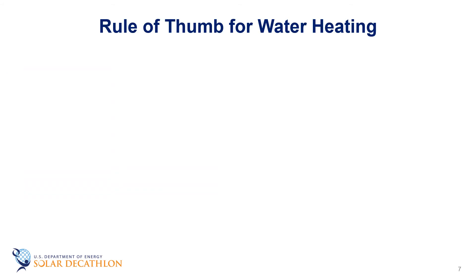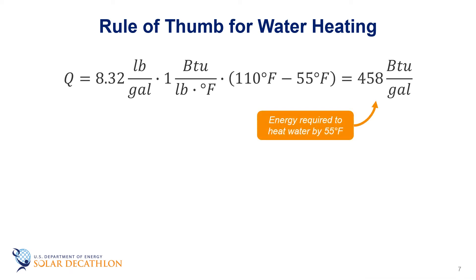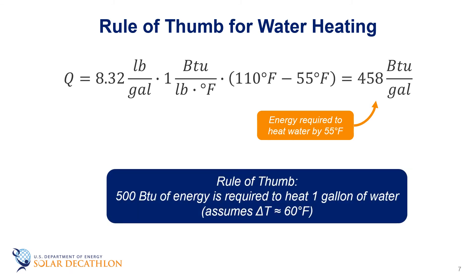Another metric that is sometimes used is the amount of energy to heat a gallon of water for the needed temperature difference. In this case, 8.32, the density, times the change in temperature, 110 minus 55 degrees Fahrenheit, is 458 BTUs per gallon of water heated for that 55 degree temperature difference. A rule of thumb typically talks about 500 BTUs per gallon, so a little bit higher than the number we just calculated. This 500 BTUs per gallon is a handy number as a quick tool to think about how much energy is needed for hot water, remembering that it assumes a certain water supply temperature as well as a temperature of the hot water.